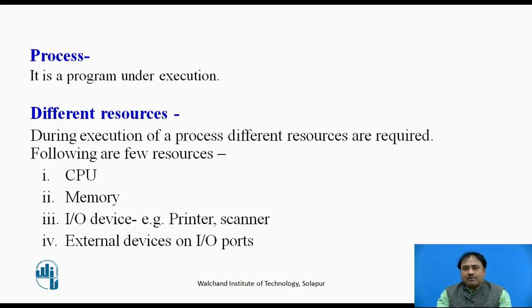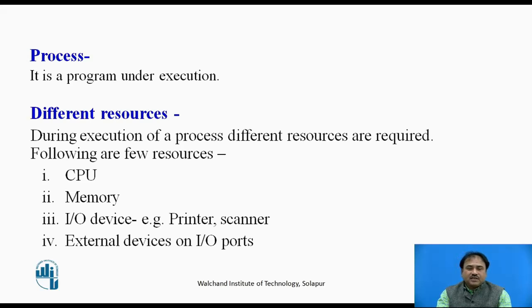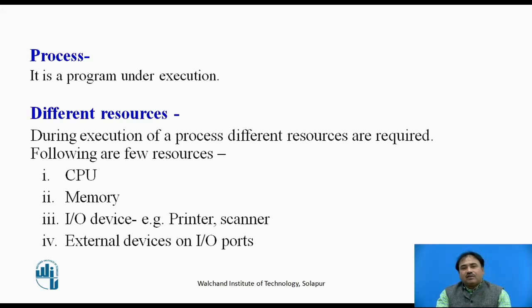For example, the CPU can be shareable because we can process two processes at the same time on the CPU. However, devices like printers and scanners are not shareable, because once we start printing, we cannot hold the printing process in between and cannot allocate the printer to another process. So the system takes utmost care while allocating these resources to different processes.